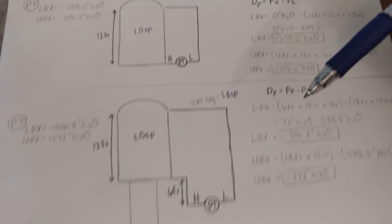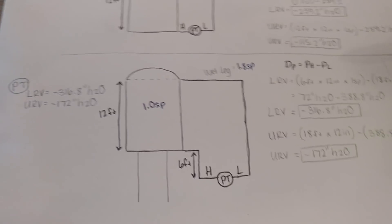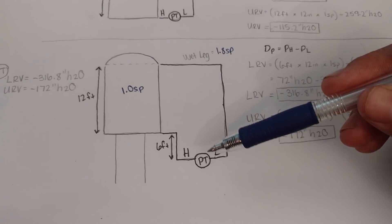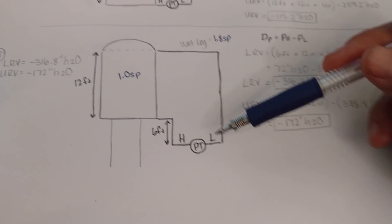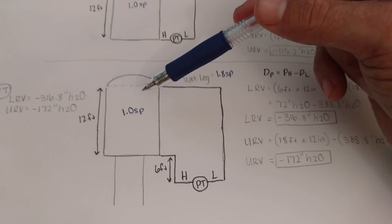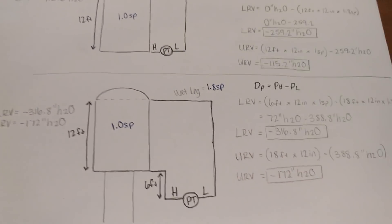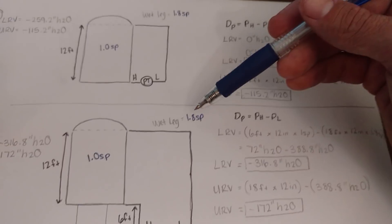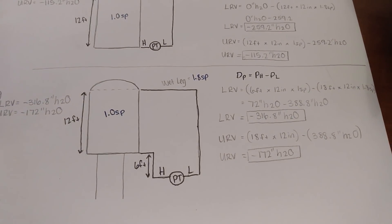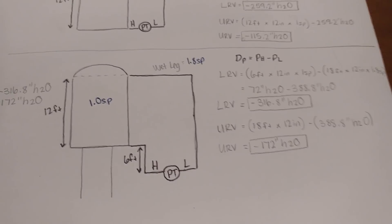Now let's look at the next equation — this is the last one. We have a differential pressure transmitter that's below our same tank: 12 feet high, water in the tank, same fluid in our wet leg. But this time it's 6 feet below the tank — so what are we going to do differently?